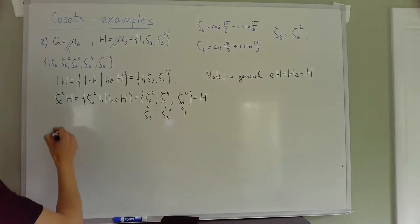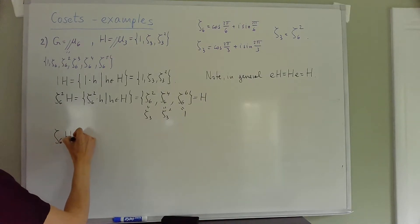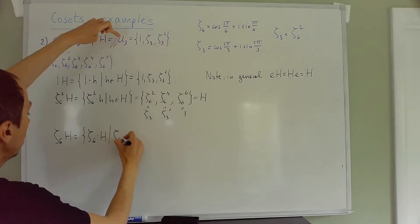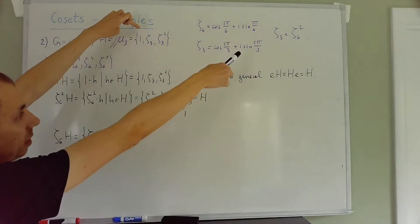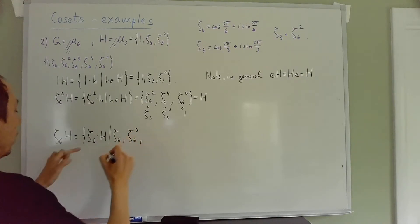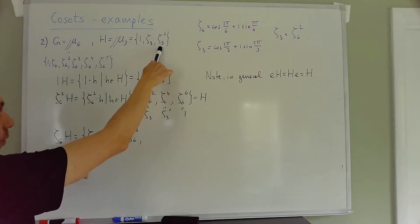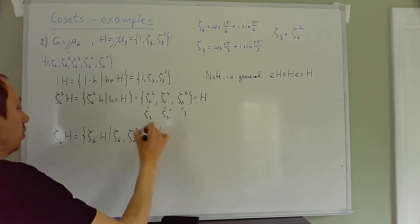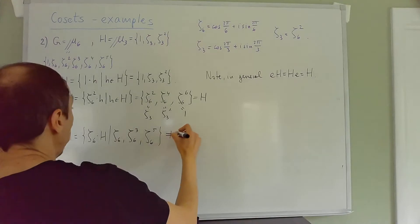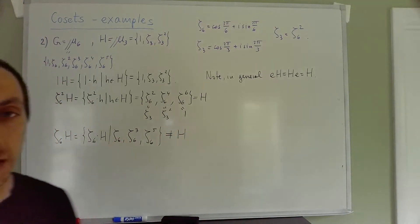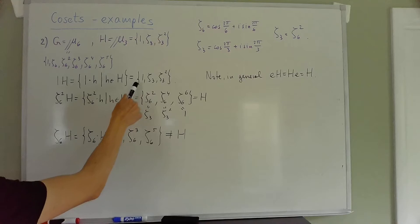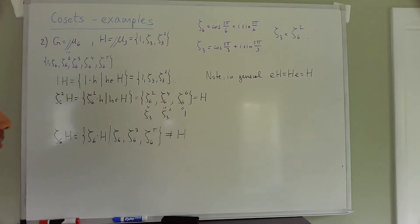Working on a hunch, let's try ζ₆. The coset ζ₆·H: ζ₆ times 1 = ζ₆, ζ₆ times ζ₃ = ζ₆ times ζ₆² = ζ₆³, and ζ₆ times ζ₃² = ζ₆ times ζ₆⁴ = ζ₆⁵. This gives {ζ₆, ζ₆³, ζ₆⁵} — the odd powers. This is definitely different from H, and in fact they share no elements in common: H contains the even powers and this coset contains only odd powers.